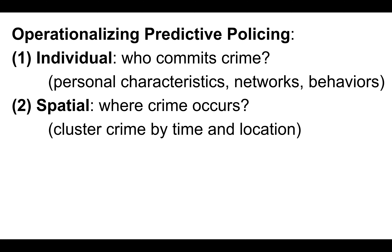How do you actually operationalize predictive policing? There are two different ways to look at it: at the individual and spatial level. The individual level focuses on who actually commits crime, and the data consists of personal characteristics, networks, and different behaviors of people. Those who meet these characteristics or engage in these behaviors receive more police attention.